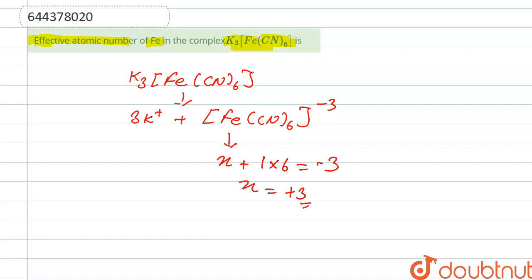x is equal to +3. So we have to calculate the effective atomic number, so it is represented by EAN and it has formula: z minus oxidation number plus 2 into coordination number